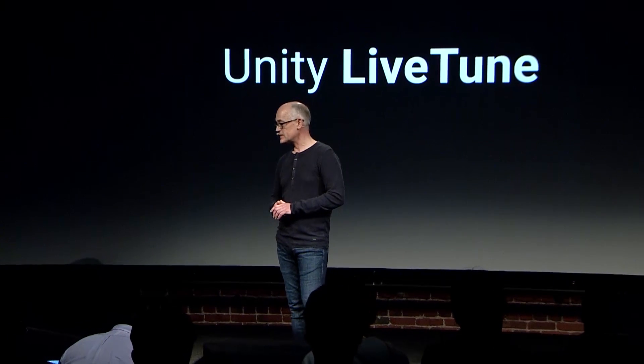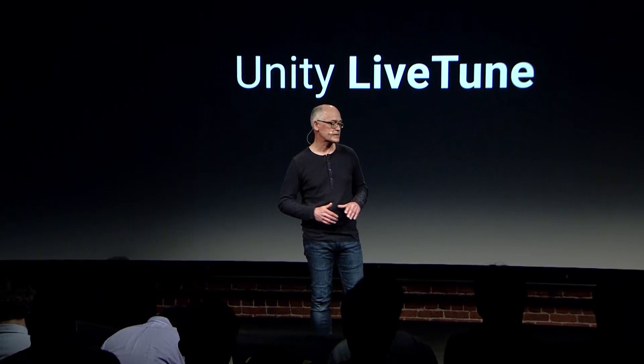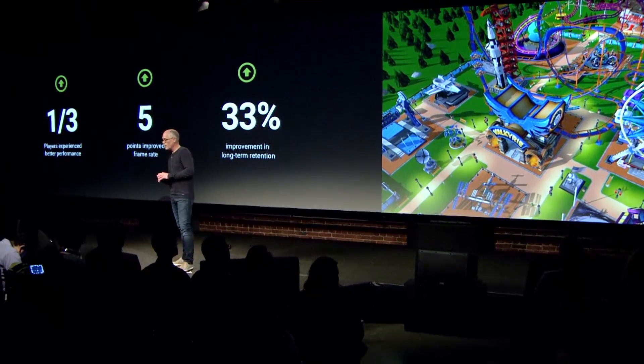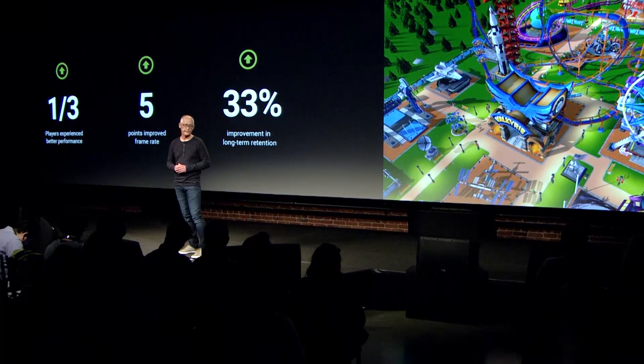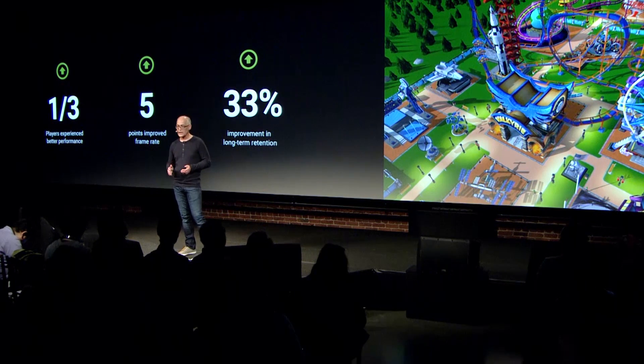Unity Live Tune optimizes performance settings dynamically for every device in real-time. It adjusts the assets, effects, and rendering for each phone model, giving the best possible experience for a player on a given device. Anvizio, an independent game studio in Montreal, used Live Tune with their game Rollercoaster Tycoon Touch. Live Tune addressed key performance issues and improved Android players' long-term retention by a whopping 33%.